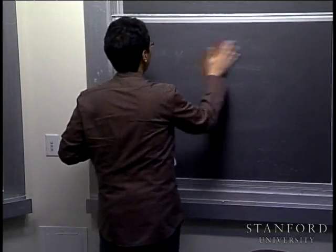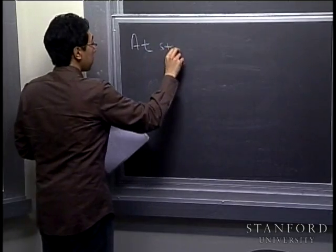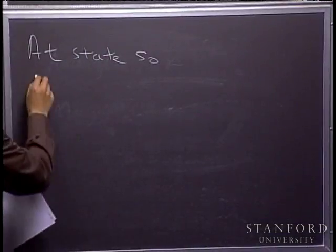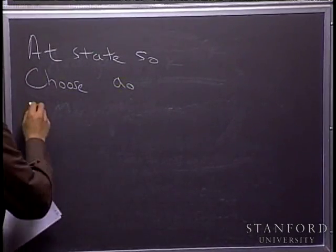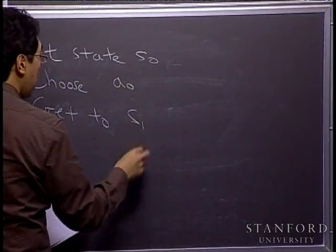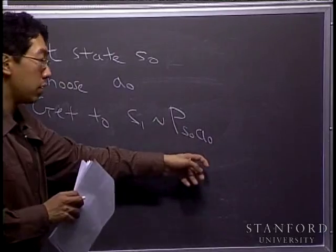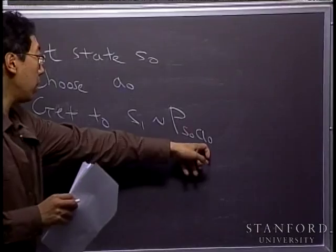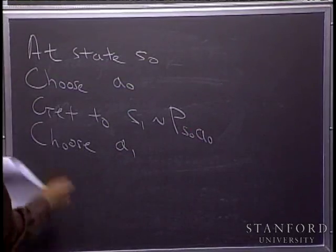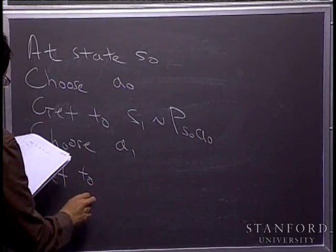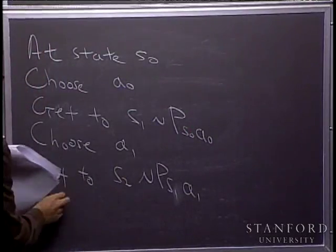Let me explain how an MDP works. At time zero, your robot starts at some state S0. Depending on where you are, you choose an action A0 — do I go north, south, east, or west? Depending on your choice, you get to some state S1, which is randomly drawn from the state transition distribution indexed by state S0 and the action you chose. After getting to S1, you choose a new action A1, and as a result you get to some new state S2 drawn randomly from the state transition distributions, and so on.